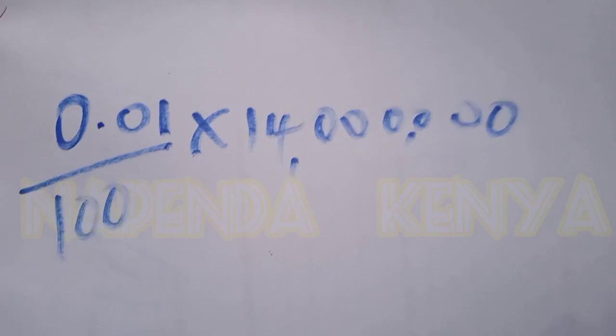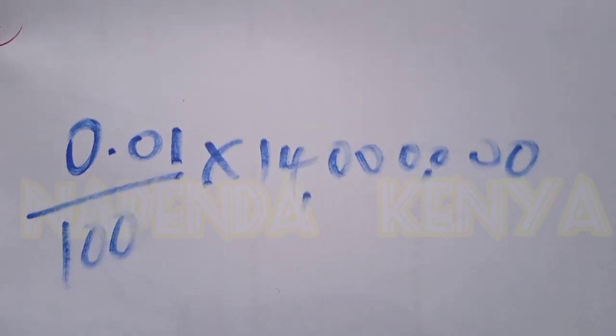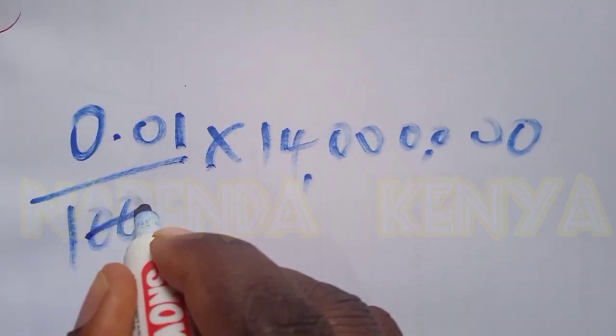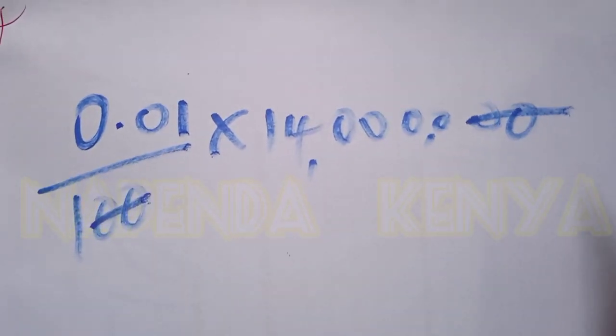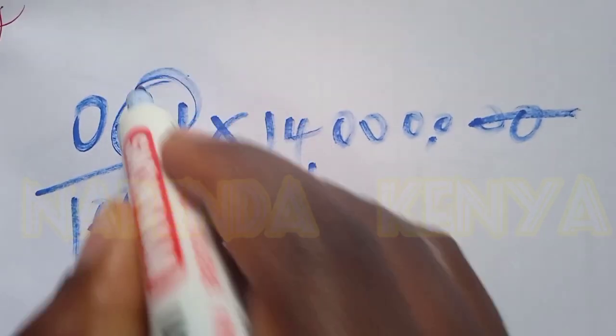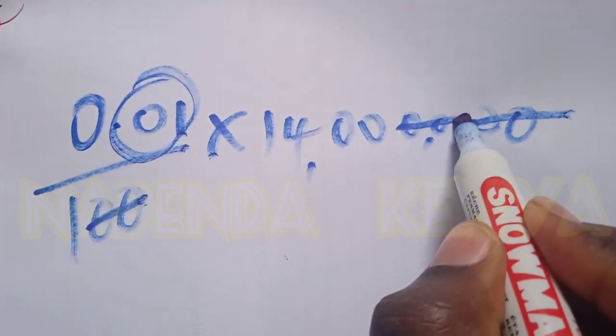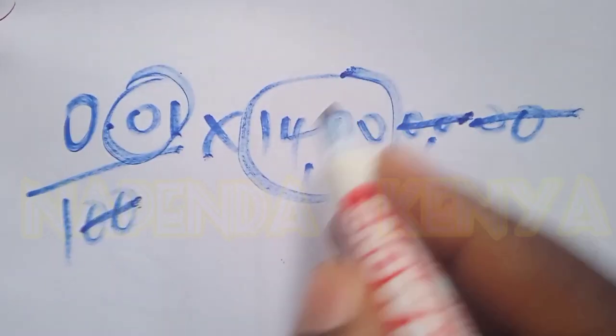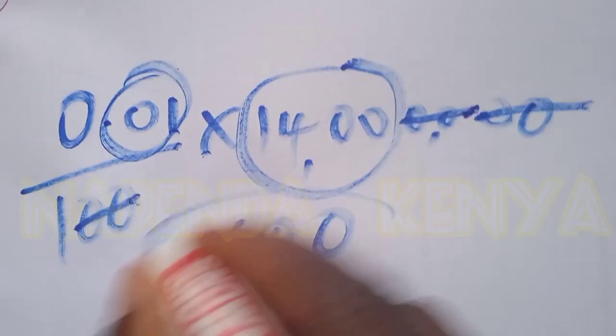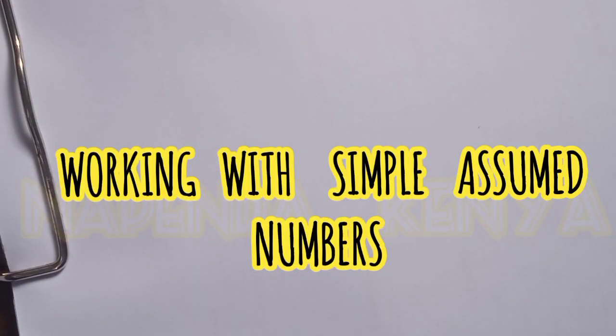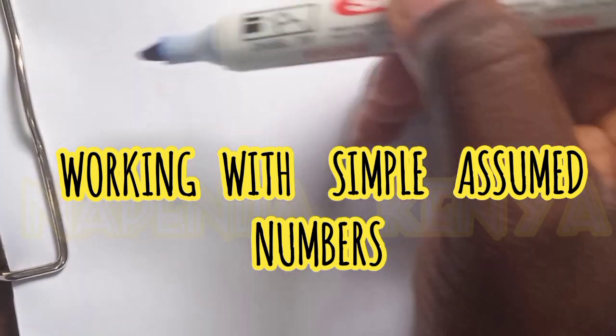Maybe let's try. In class 4 we were taught how to cancel numbers. When we have this one here, these two zeros would cancel these two other zeros here. These two decimal places will cancel two zeros and we end up with 1,400 votes.